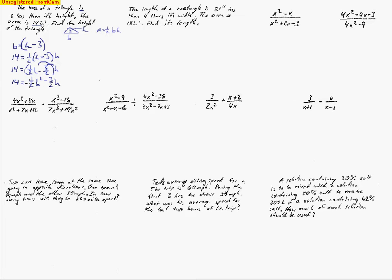This seems complicated, so let's eliminate these fractions. Since we've got an equation, we can multiply the whole thing by two — every single number — and notice that the twos will cross-cancel. So now I've got 28 equals h squared minus 3h. Now I'm going to use factoring to solve, so I'll move this 28 to the other side by subtracting, giving us h squared minus 3h minus 28 equals zero.